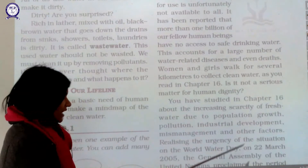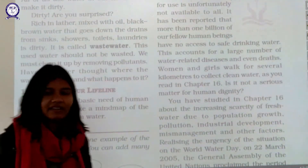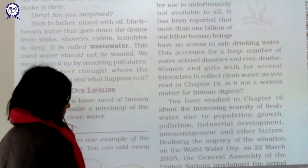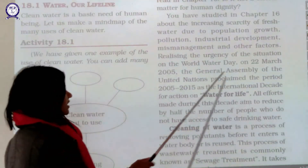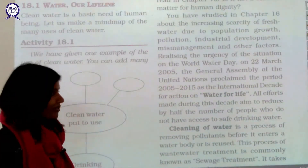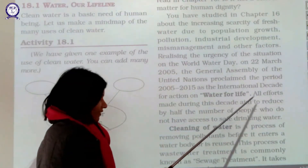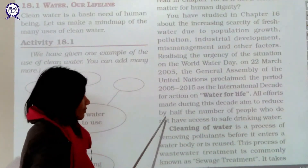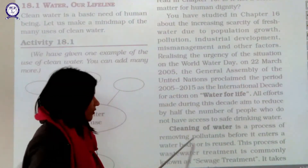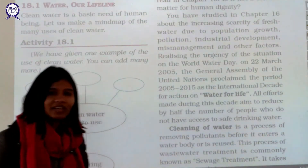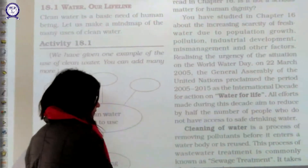Realizing the urgency of the situation, on World Water Day — 22nd March — the UN General Assembly proclaimed the period 2005 to 2015 as the International Decade for Action: Water for Life. All efforts during this decade aimed to reduce by half the number of people without access to safe drinking water. Cleaning of water is the process of removing pollutants before it enters a water body so that we can reuse it — this is waste water management.